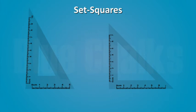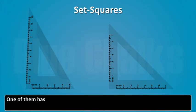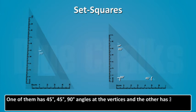Next is set squares. Set squares are two triangular pieces. One of them has 45 degree, 45 degree, 90 degree angles at the vertices, and the other has 30 degree, 60 degree angles.